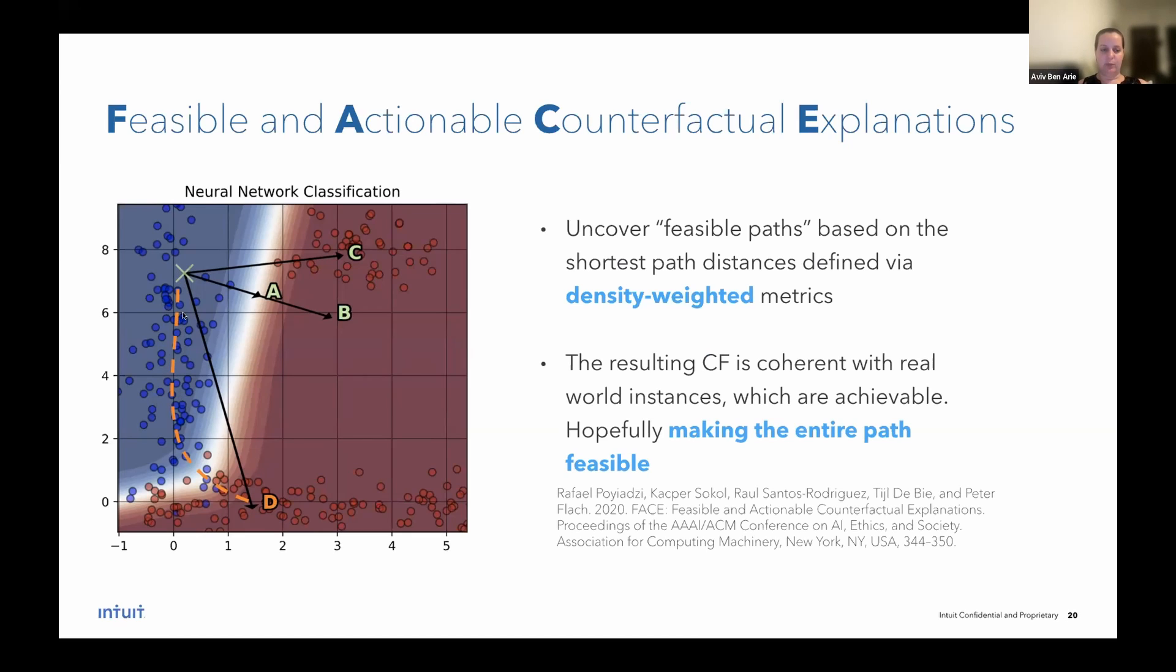And apparently these dense paths give a very high probability of the path between X and D to also be feasible, because the path passes through real instances or real users. So what they do is they weigh the density with a distance and derive a short, relatively short path, but that is also dense. And this makes the counterfactual more likely to be feasible. So I think this is a very cool algorithm.